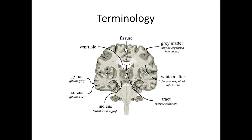We have ventricles, which are areas where the cerebrospinal fluid is — the big areas. And we have tracts, which you should recognize from the spinal cord: areas of white matter running together in a particular location.